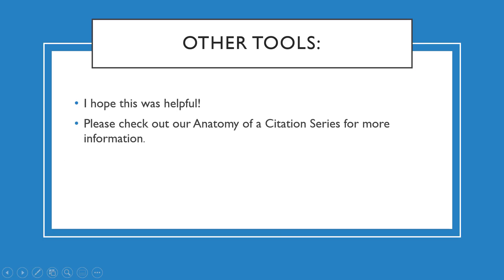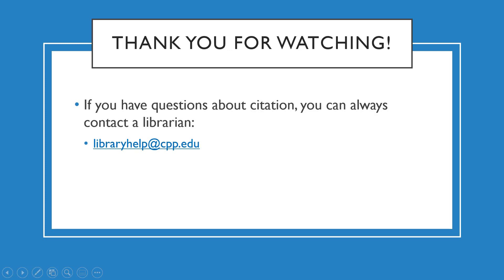I hope you found this tutorial useful for finding the bibliographic information you need to create your own citations. Please check out our tutorial series on the anatomy of book and article citations in different styles to see the role each of these parts play in citation and how they all come together. Finally, you can always contact a librarian for citation assistance. Email us at libraryhelp@cpp.edu. Thank you for watching.